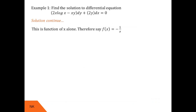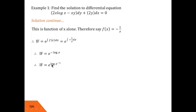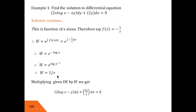Using f(x) = -1/x, the integrating factor is e raised to the integration of f(x) dx = e raised to the integration of (-1/x) dx = e raised to minus log x = e raised to log(x⁻¹) = x⁻¹ = 1/x. So the integrating factor is 1/x. Multiplying the given differential equation by 1/x, we obtain the new exact differential equation: (2 log x minus y) dy plus (2y/x) dx = 0.